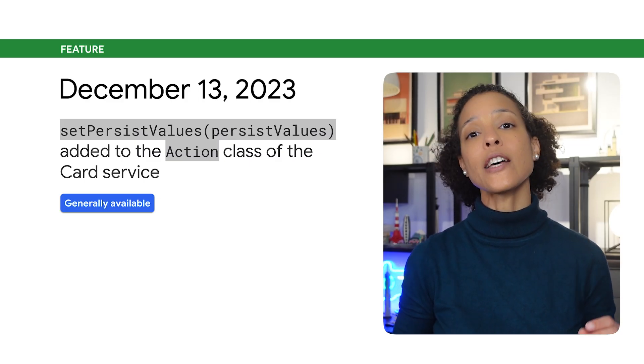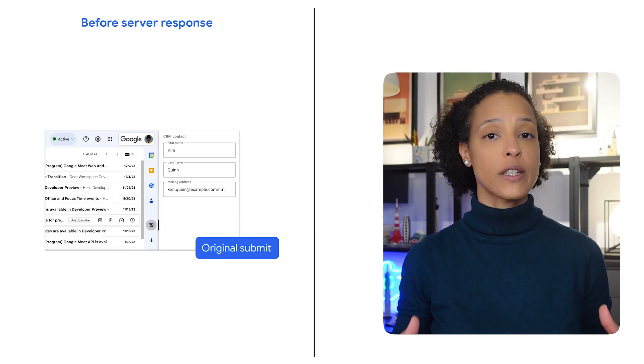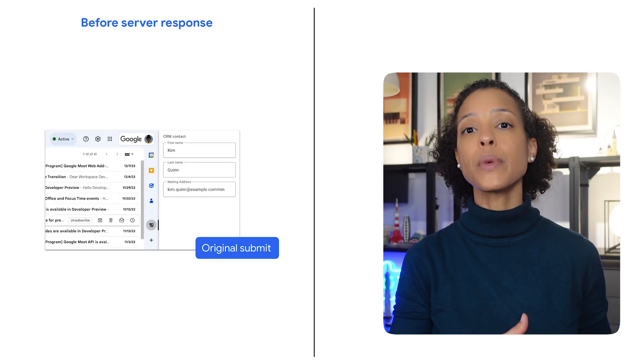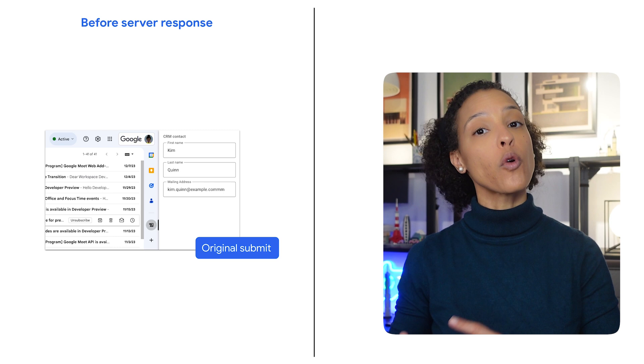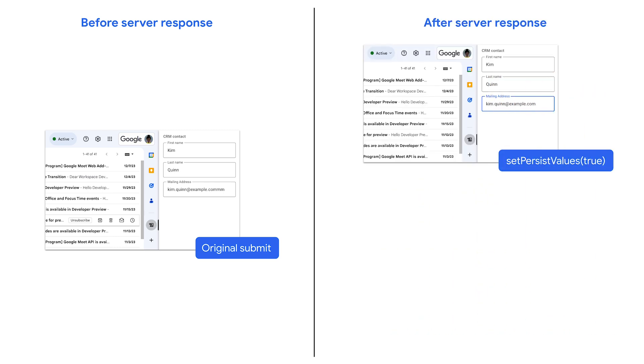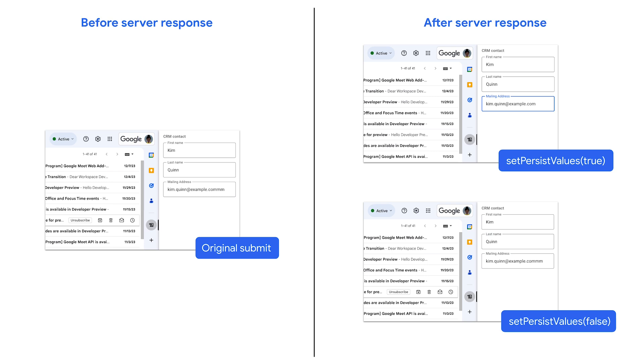The SetPersistValues method has been added to the action class of the card service. This means that you can now indicate whether the form values are determined by the client's values or the server's values after an action response updates a form's card. Let's see how persisting the client values helps prevent situations where a form changes unexpectedly after a user makes an edit. For example, a user notices a typo after submitting a form and edits the corresponding text input before the server responds. If the values are persisted, the edit the user made remains after the server response updates the card. Otherwise, the form value returns to the value that the user originally submitted.